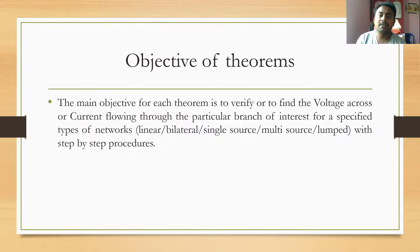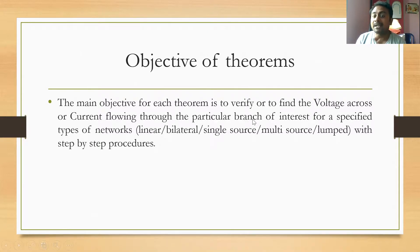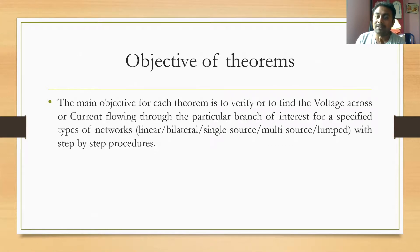The objective of each theorem is either to verify something or to find something. In the majority of theorems, we are going to find the voltage across or the current through a particular branch — not all branches. The theorem will specify finding the voltage across, or the current flowing through, a particular branch.